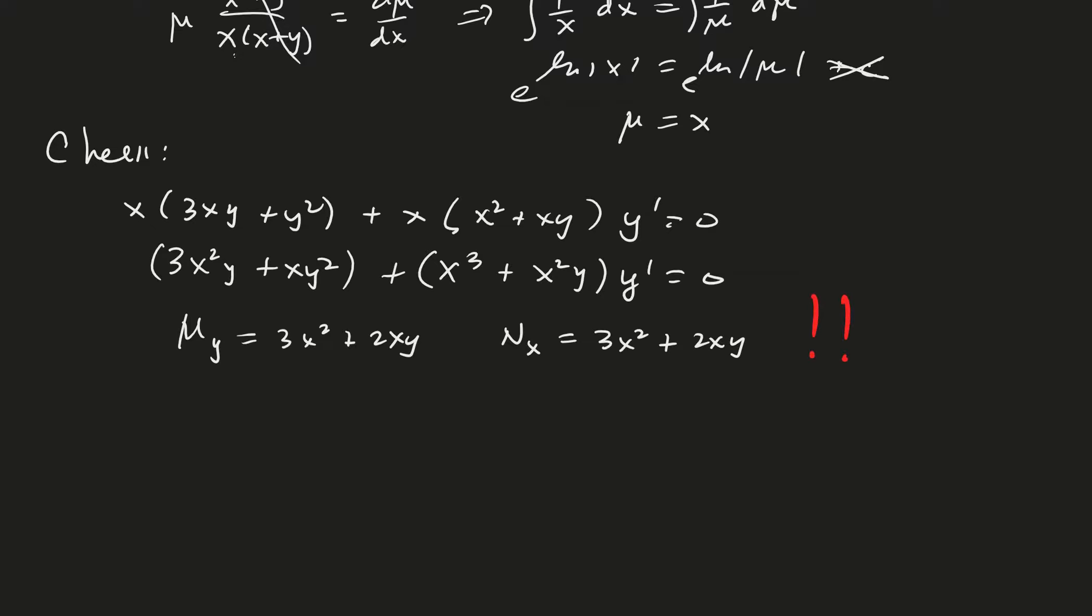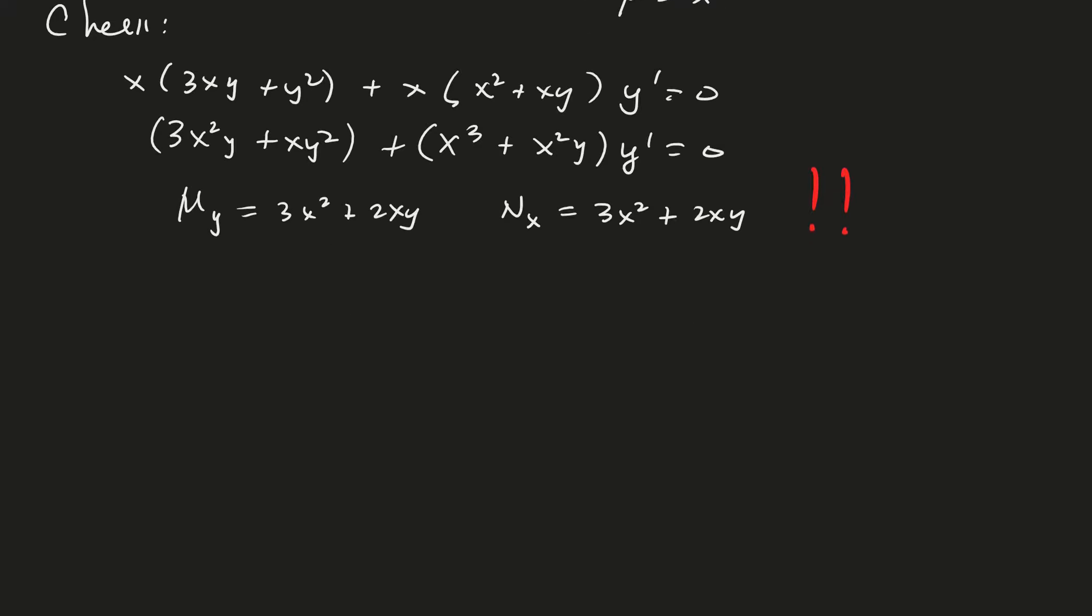Good. Alright, so now the equation is exact, and now we can solve for our function f. So then, f is going to be the integral of M dx, right? And so it's going to be the integral of 3x squared y plus xy squared dx, which looks like x cubed y plus one half x squared y squared plus some unknown function of y. Okay. And we can go back and say that f is also equal to N dy and do a comparison. We haven't done that in a while.